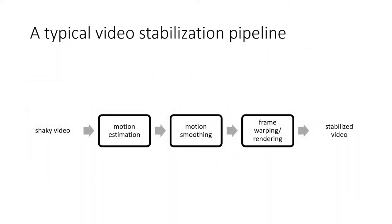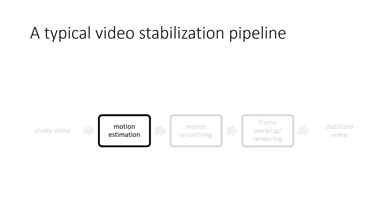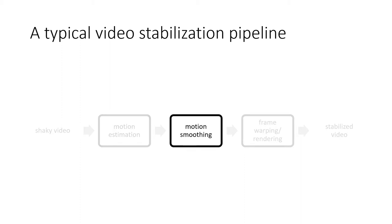Let's first look at a typical video stabilization pipeline. First, the motion estimation step involves estimating motion within neighboring frames. Second, the motion smoothing step removes the high-frequency jittering in the estimated motion and predicts the spatial transformations to stabilize each frame.